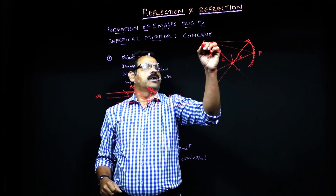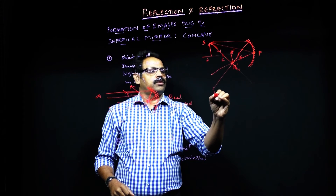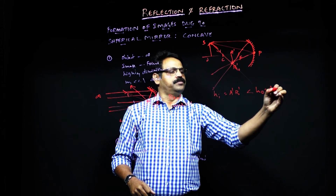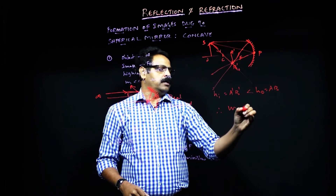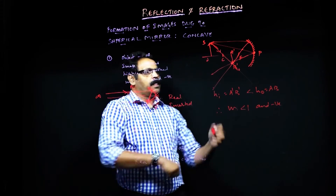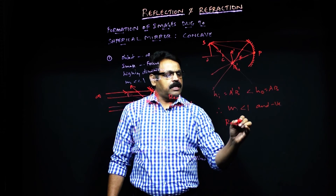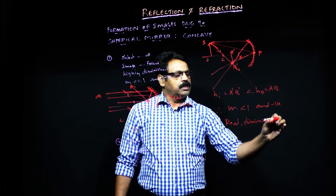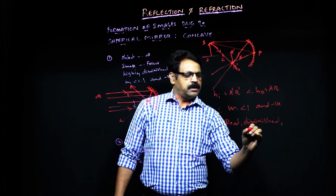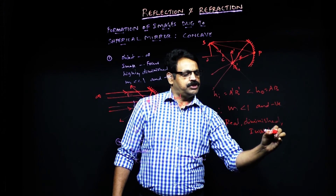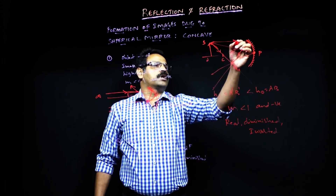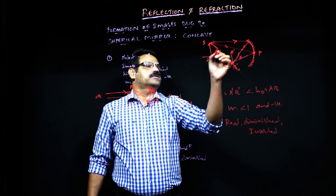So this is object AB and the image is A'B'. The height of the image A'B' is less than the height of the object AB. Therefore, magnification is less than 1 and negative because the image is formed on the negative y-axis. The image can be traced on a screen — that is the reason it is real, diminished, and inverted. AB is vertical whereas the image is reversed, so inverted. This is the nature of the image when the object is beyond C.